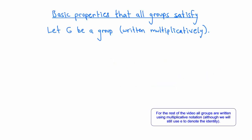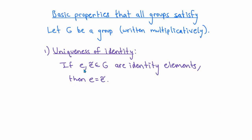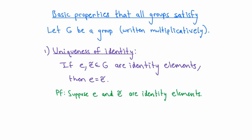Now let's get to talking about properties of groups. The first property is called uniqueness of identity. What it says is that if there are two elements e and e-tilde which both satisfy the second condition in the definition of the group, then they have to be equal to each other. In other words, in a group there is only one identity element. We're going to go slowly through the proofs of these results, because I want you to see how they follow in this abstract setting just from the three properties in the definition of a group.